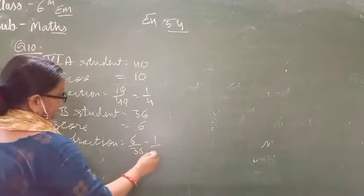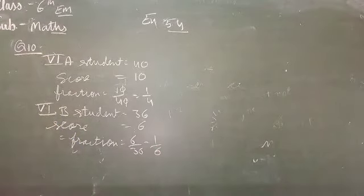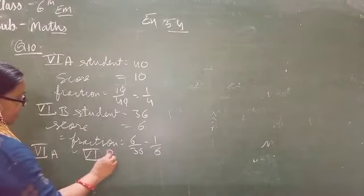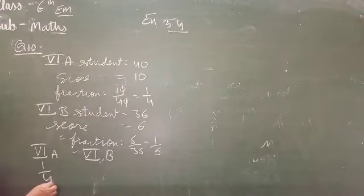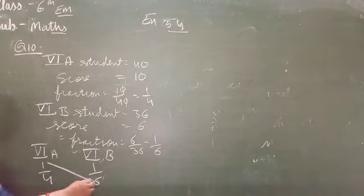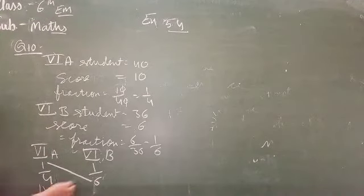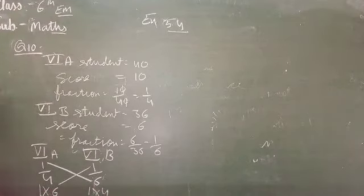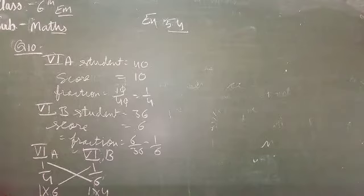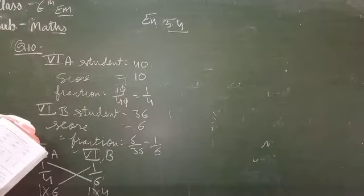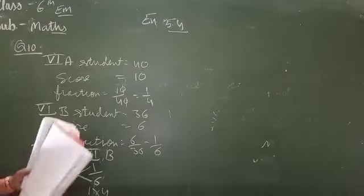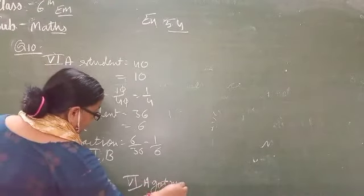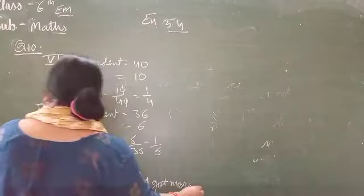This is 6 upon 36. So comparing 6A and 6B, 6A has more students scoring above 90 marks.